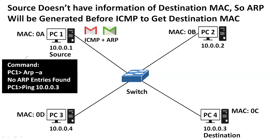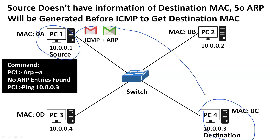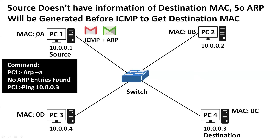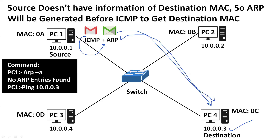Whenever we forward an ICMP packet to check the connectivity between two devices — let's say this is the source and this is the destination — the ICMP signal will not be forwarded before ARP. Due to lack of information about the destination MAC address, the ARP packet will be automatically generated to fetch the MAC address of the destination, because in Layer 2 communication a packet cannot be forwarded without the destination MAC address.